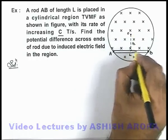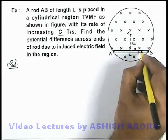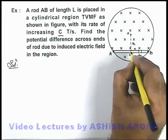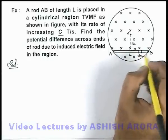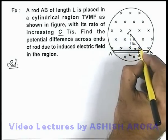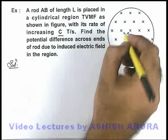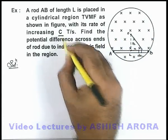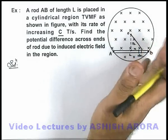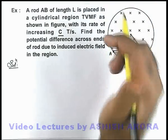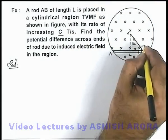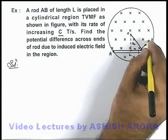To calculate it, let us consider an element of width dx from the centre of the rod. At this point we can see as in downward direction magnetic induction is increasing.